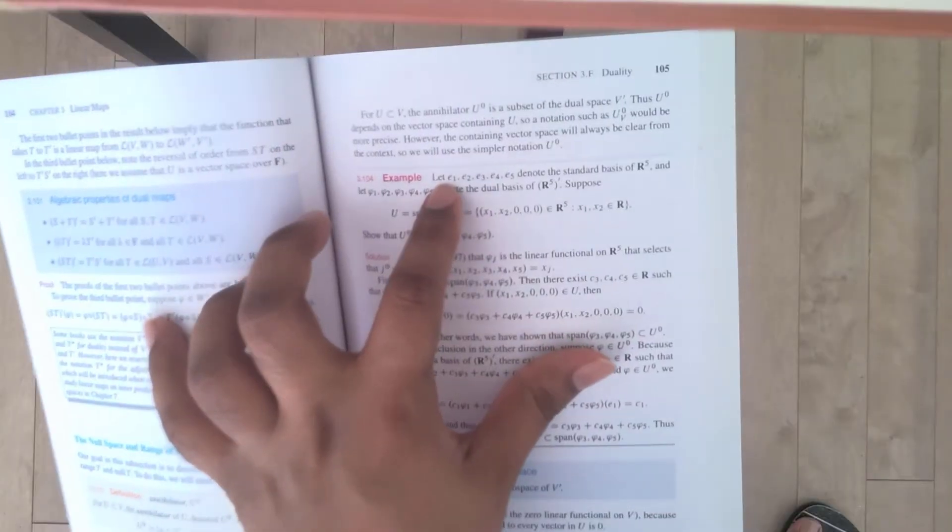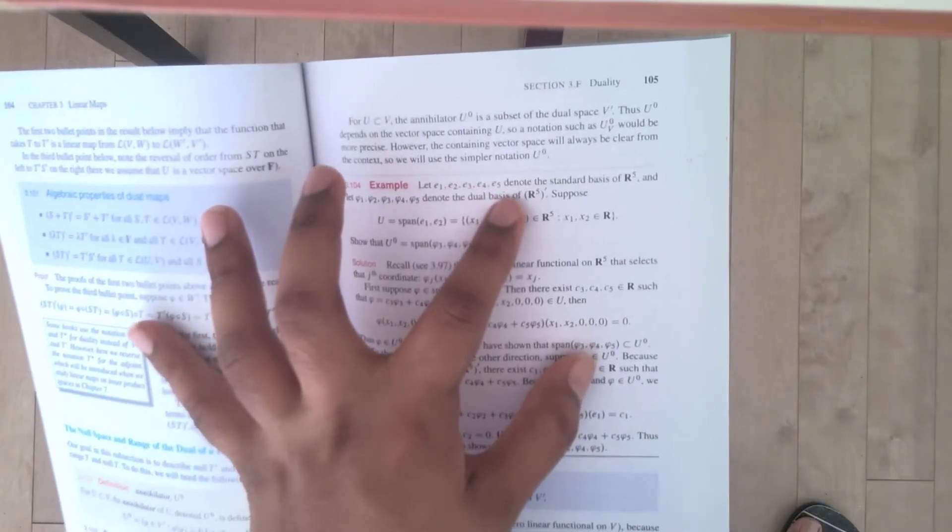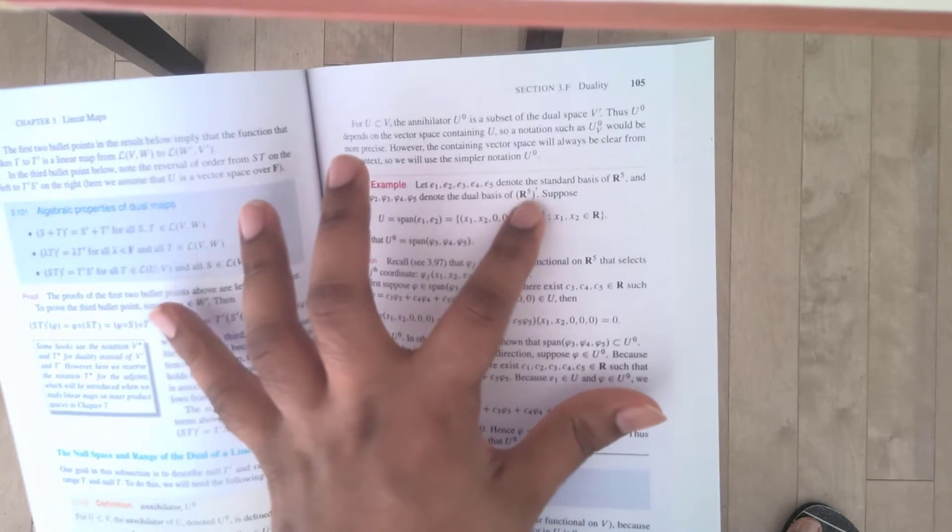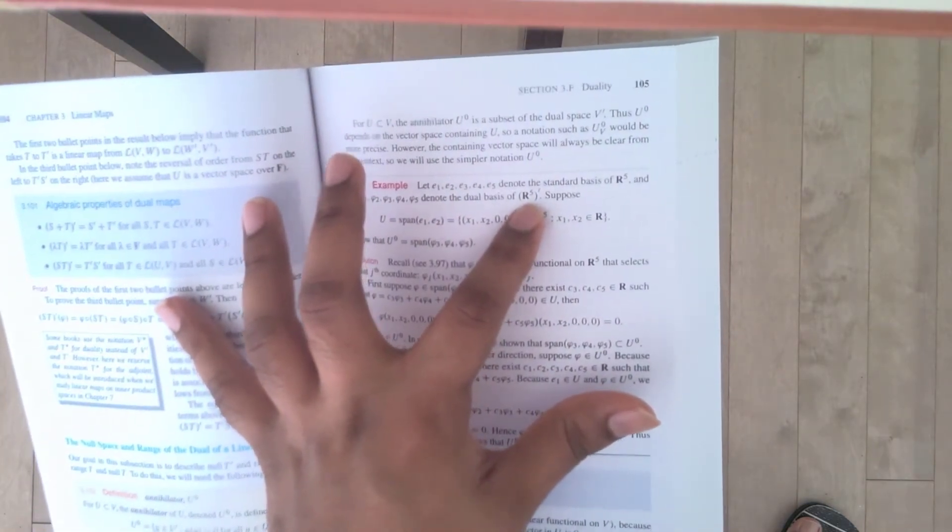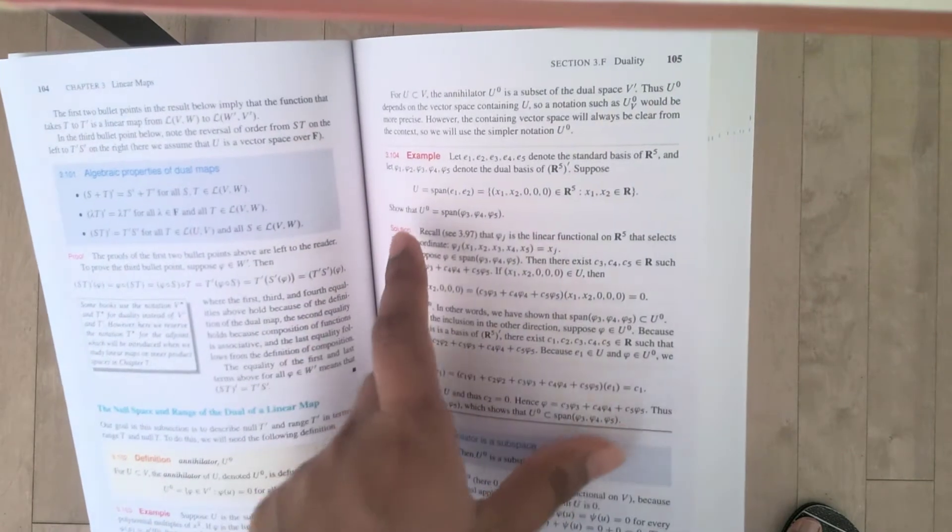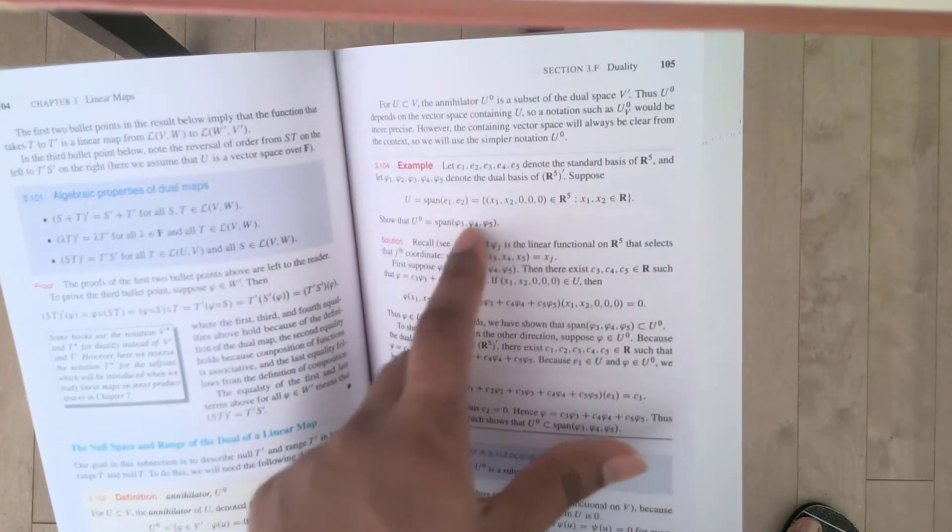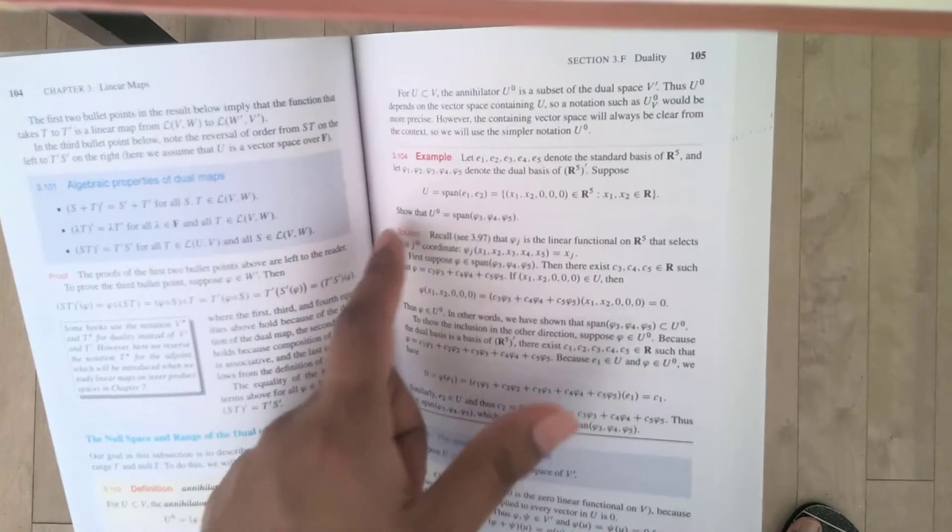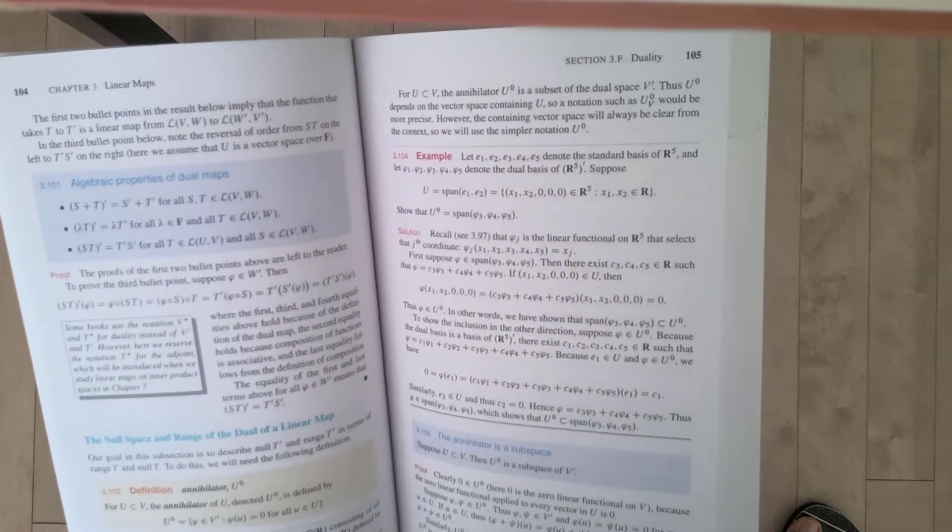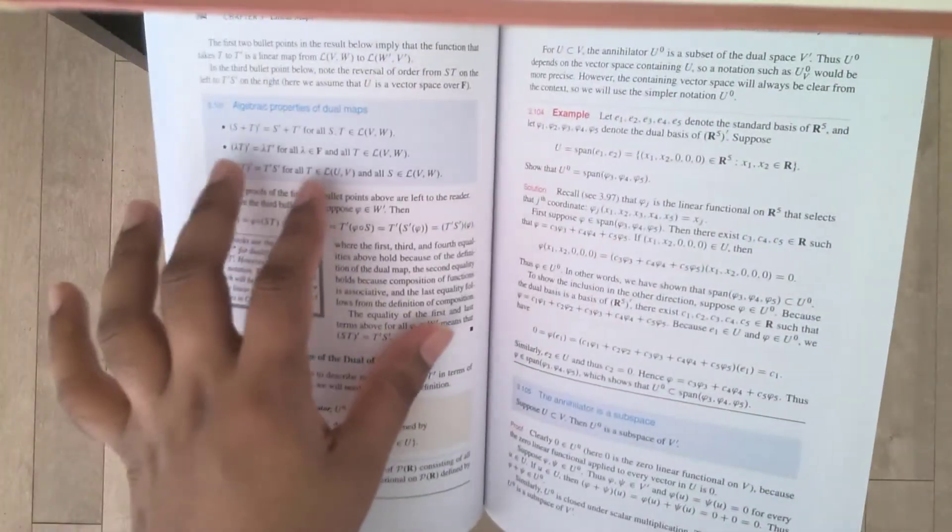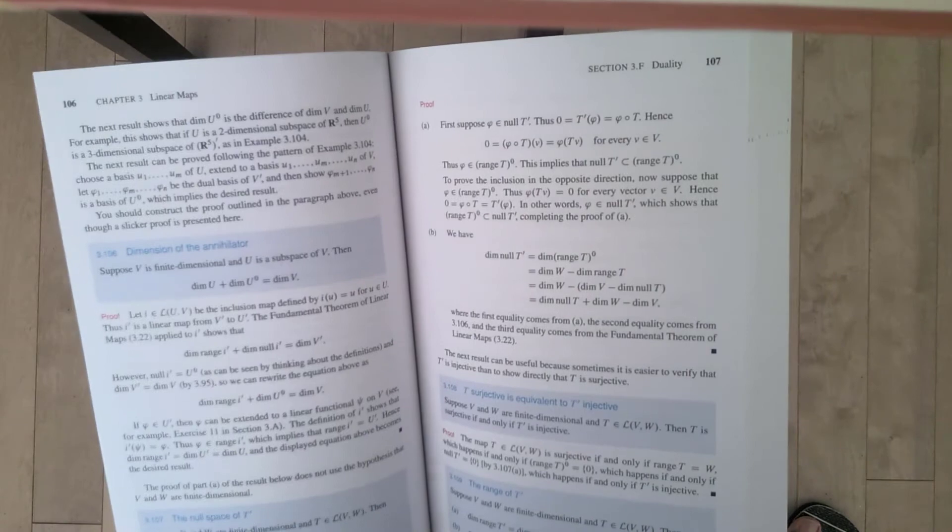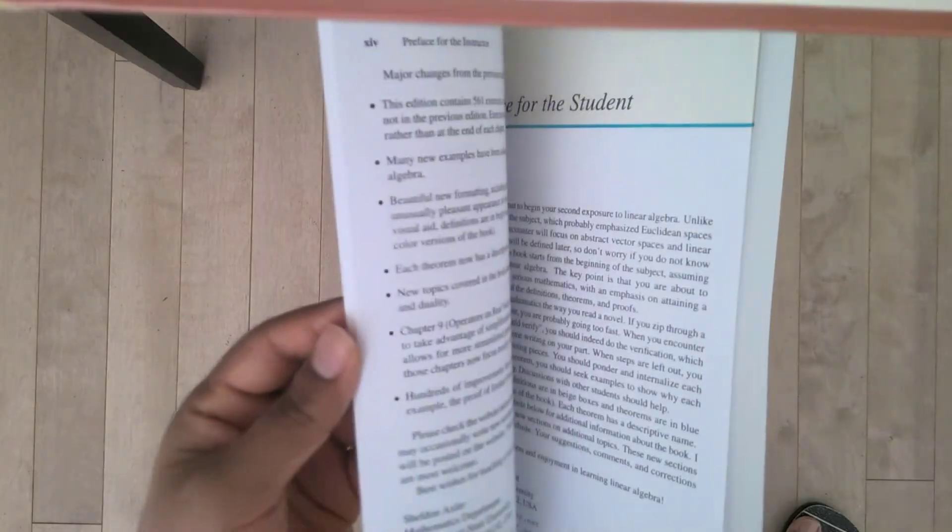And let's see, it says let E1 to E5 be the standard basis of R5. And let these be the dual basis elements of the dual space to R5. And it's asking to show that the annihilator is the span of these three elements of the dual basis. I like this question and the way it is worked out in full detail, because it really helps you to appreciate the more conceptual details while seeing it fully worked out. So this book is really great for self learners, as well as for people who are just taking a class.